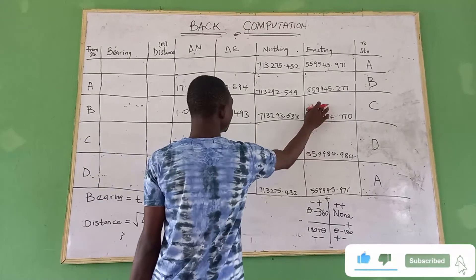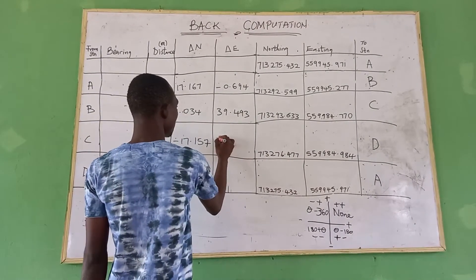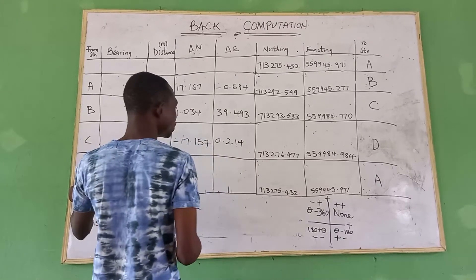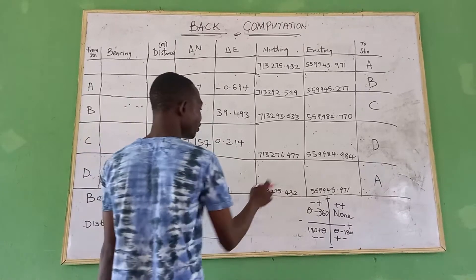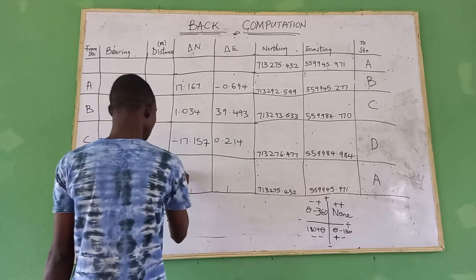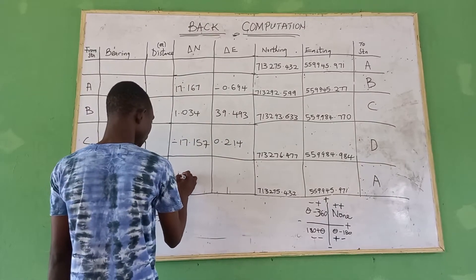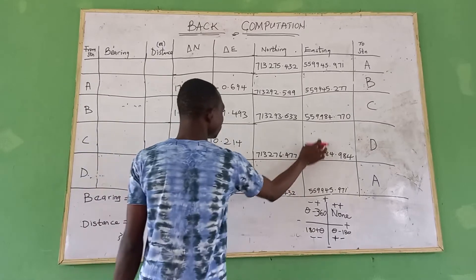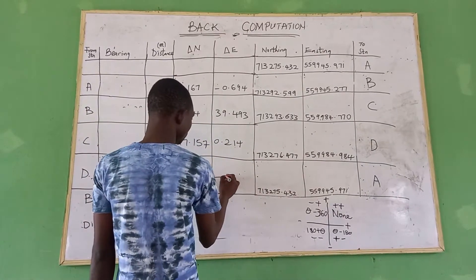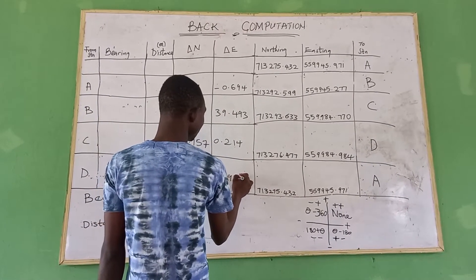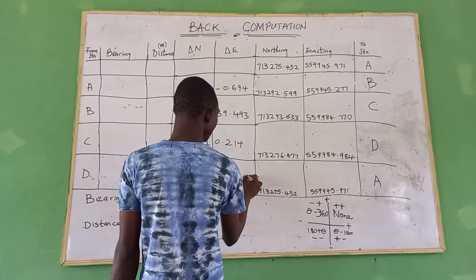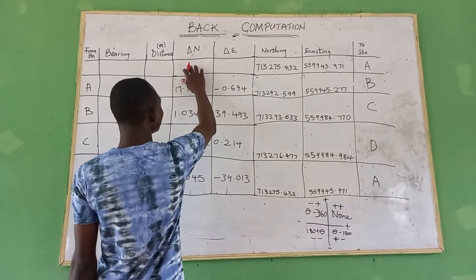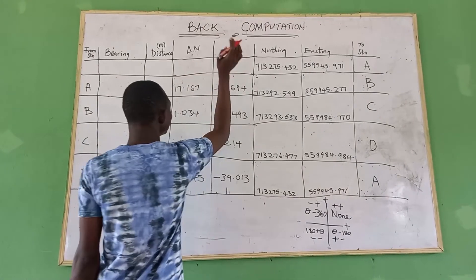This subtraction gives us 0.214. For the last station D, this subtraction gives us minus 1.045. And this subtraction gives us minus 39.013. Now you can obtain your delta northing and delta easting. The last thing to do is to calculate your distance and bearing.